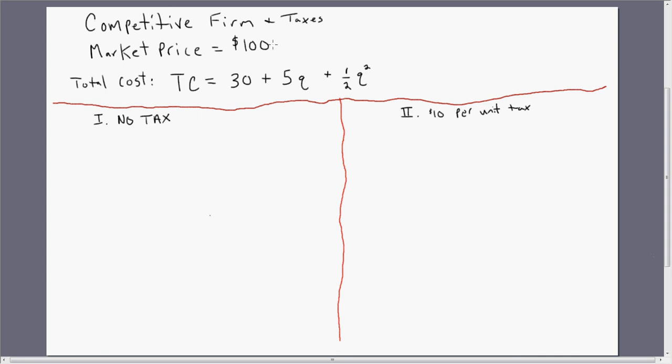So here's our setup. This firm is a price taker, takes a going market price as a given. So the firm sells its product at $100. That's where the market demand and market supply curve intersect. This firm has a cost structure given by this TC equation, total cost.